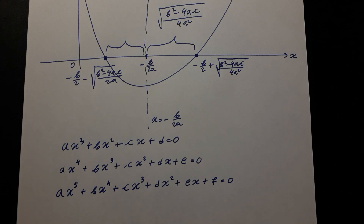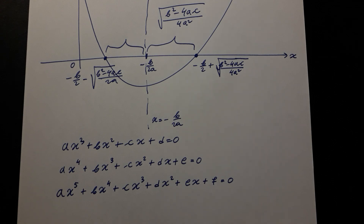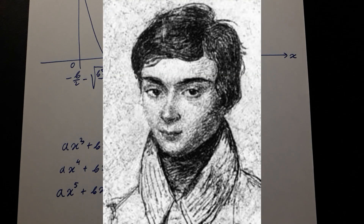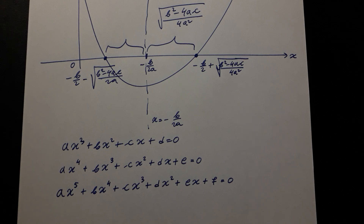Why does the pattern stop at 5 when it worked for 2, 3, and 4? The answer lies in a very beautiful and deep area of mathematics called Galois theory, which is part of abstract algebra. Galois is the man who solved this problem — and what is even more amazing is that he was not even 21 years old when he died. This is just an introduction to topics I plan to cover in the future, including a full university-level course on abstract algebra.